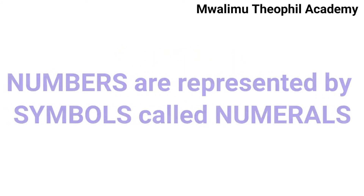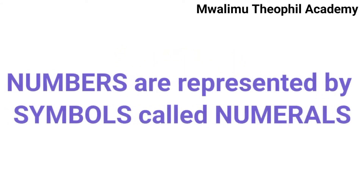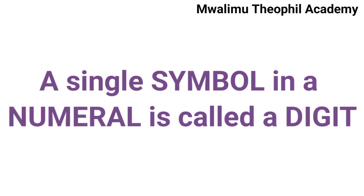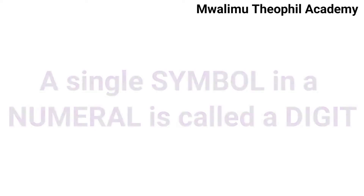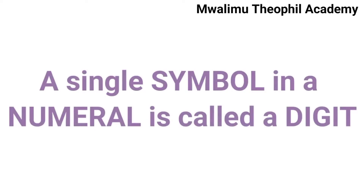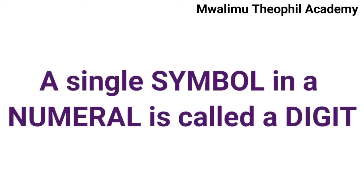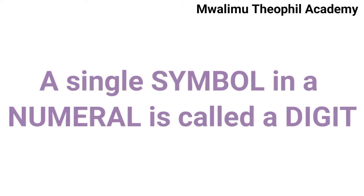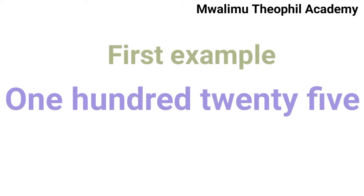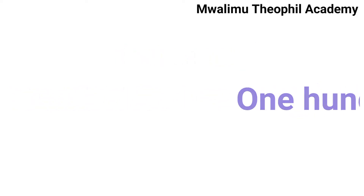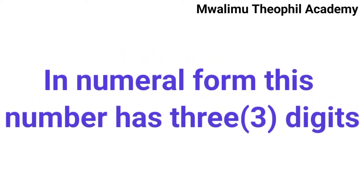We say that numbers are represented by symbols called numerals, and a single symbol in a numeral is called a digit. Let us see different examples concerning digits and numerals. For example, a number which is read as 125 is composed of three digits.